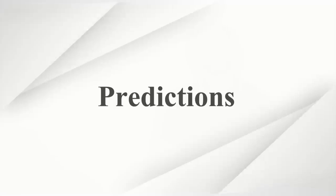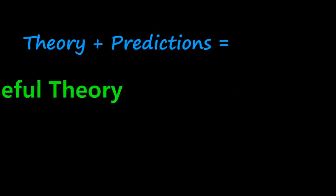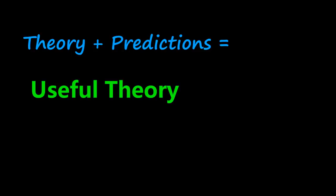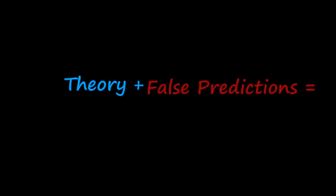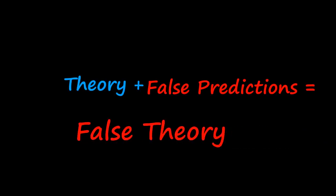In previous episodes we explained that one of the most important features of theories are their ability to make predictions. A theory that makes useful predictions is a useful theory, but a theory that makes predictions that then turn out to be false — meaning that when you test those predictions in reality you find they are in contradiction with reality — the predictions are false, and the theory by consequence is false.